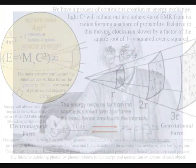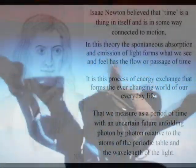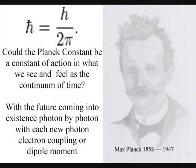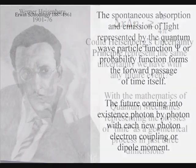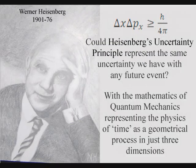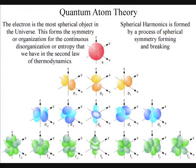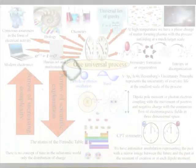In such a theory, classical physics represents processes over a period of time, as in Newton's differential equations, with quantum mechanics representing the physics of time itself as a physical process, with Heisenberg's uncertainty principle representing the uncertainty of everyday life at the smallest scale of the process.